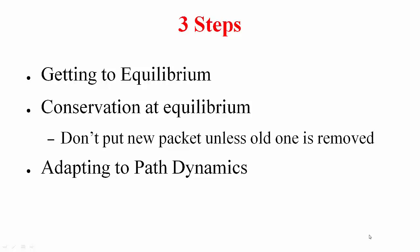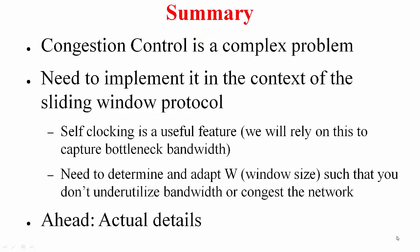The solution approach follows three steps: first, getting to equilibrium — filling up the pipe; second, conservation at equilibrium — not putting in new packets until old ones leave; and third, adapting to path dynamics — handling a varying bandwidth-delay product. To summarize, congestion control is complex, implemented in the sliding window protocol context. Self-clocking captures bottleneck bandwidth and the congestion window must be tuned to avoid both underutilization and network congestion. Details follow in later videos.